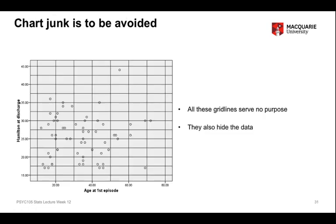This is a less extreme example, graphing age at first episode of major depression versus Hamilton score at discharge from a psychiatric unit. The graph itself is interesting, but the message from the graph is perhaps not as clear as it could be. Grid lines have been added at every 5 and then 2.5 points on the Hamilton score, but there are so many of them that the grid lines themselves become distracting.